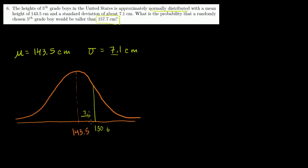That's one standard deviation. If we were to go another standard deviation, we go 7.1 more. What's 7.1 plus 150.6? It's 157.7, which just happens to be the exact number they asked for. They're asking for heights, the probability of getting a height a lot higher than that.